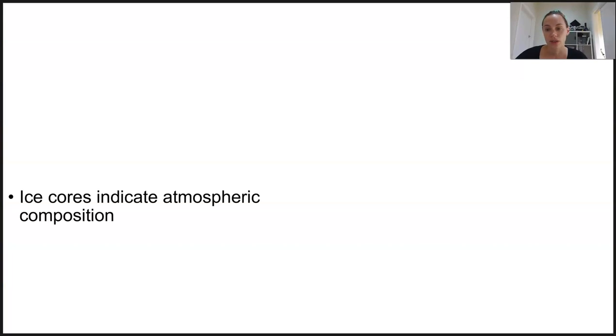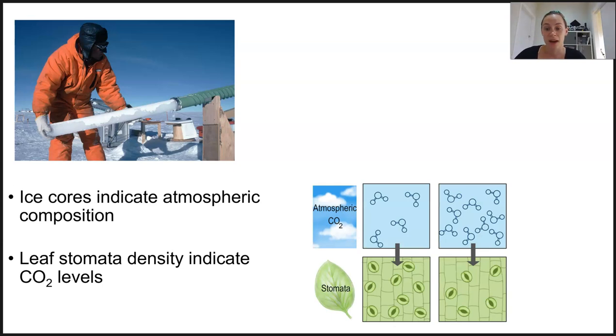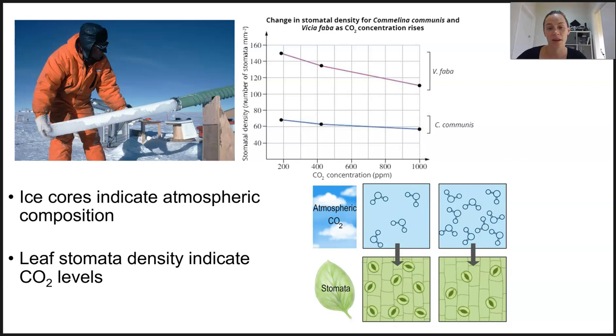Ice cores can be used by scientists to determine the atmospheric conditions back in the past based on the air trapped inside the ice. There are leaf fossils that show the density of stomata and that can indicate the CO2 levels in the atmosphere at the time. In leaves with a lower density of stomata we can infer that there was a greater concentration of CO2 in the air, and as it decreased leaves needed to adapt by increasing their stomata density to more efficiently capture the gas in the air for photosynthesis.